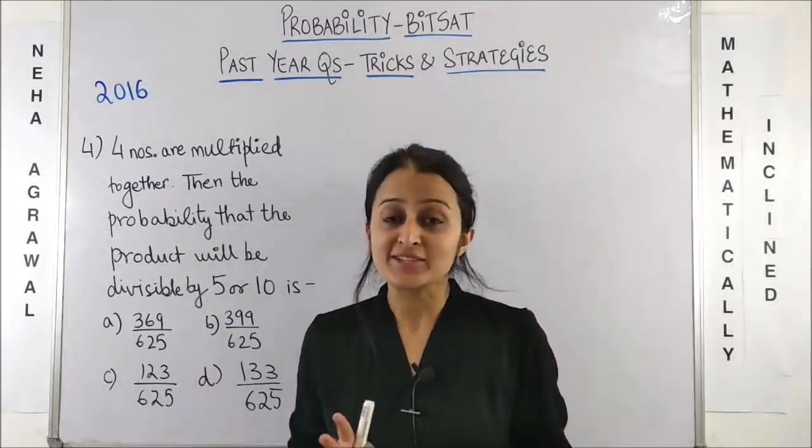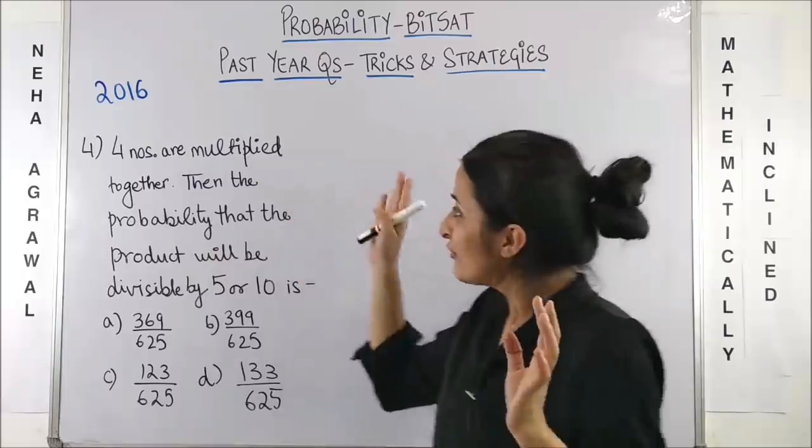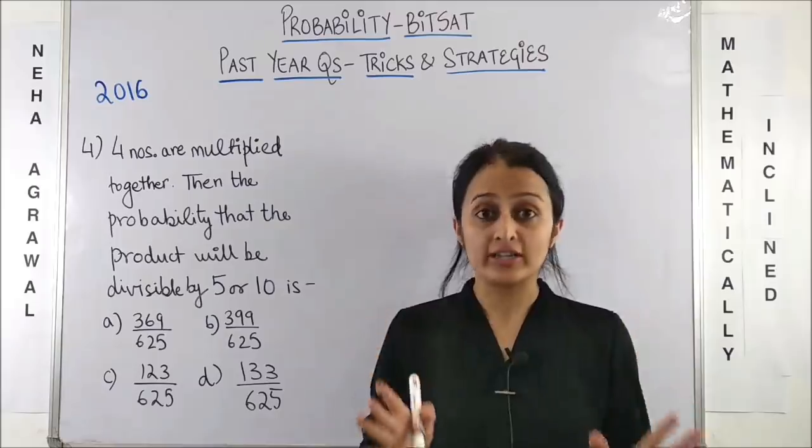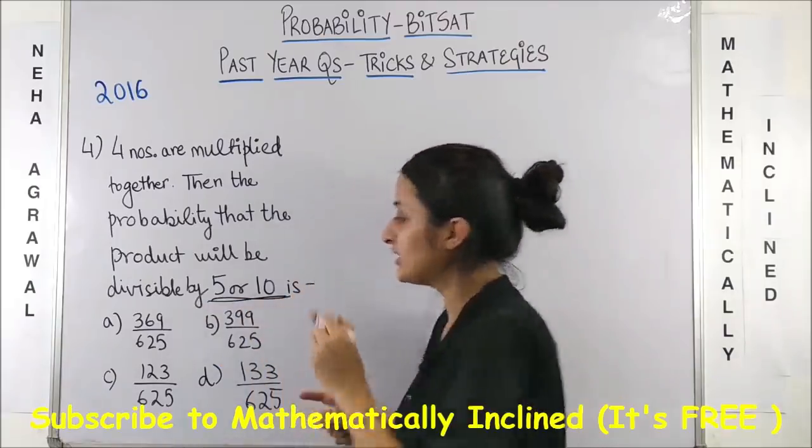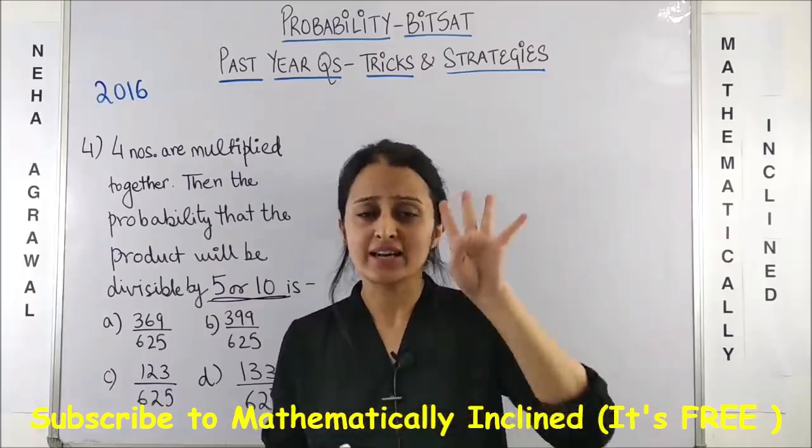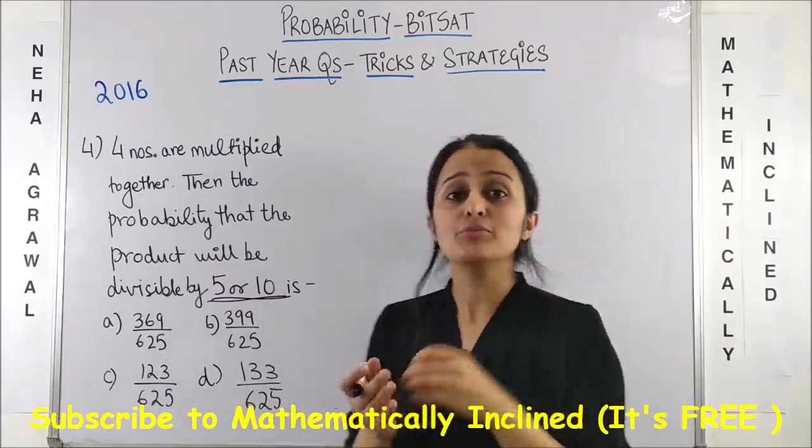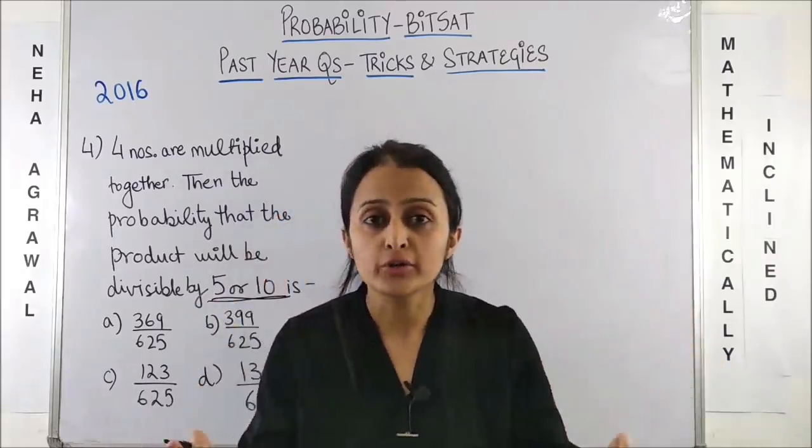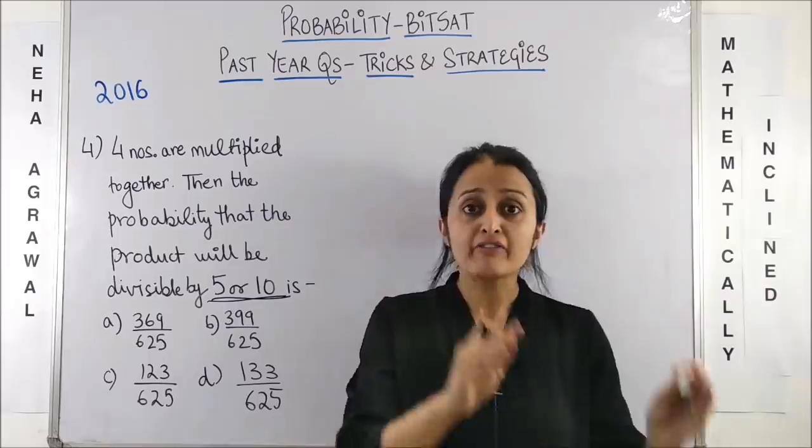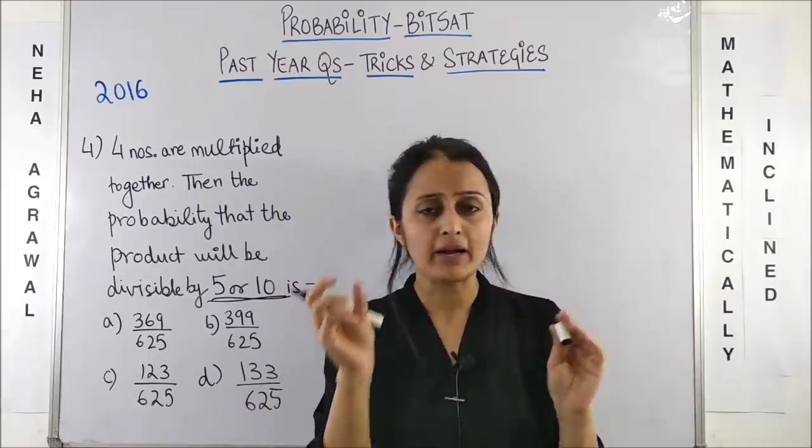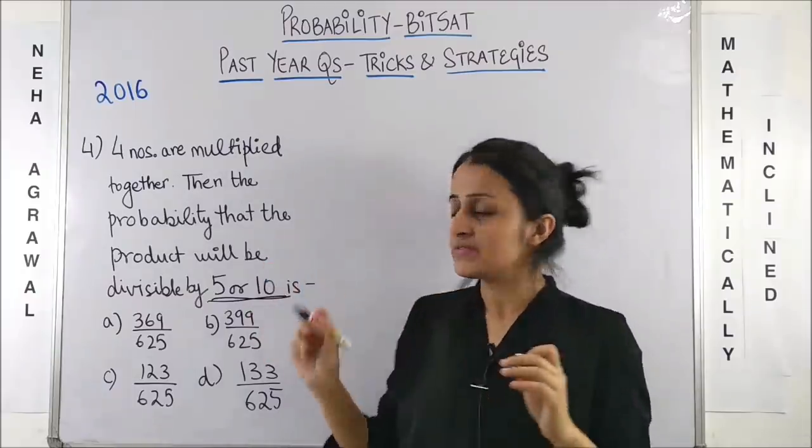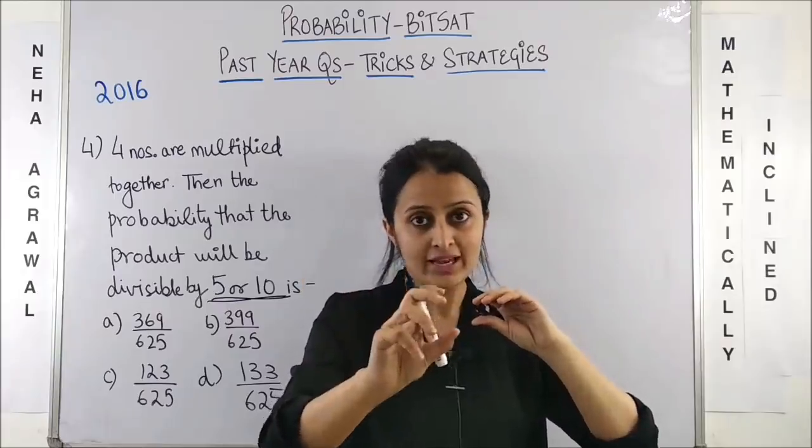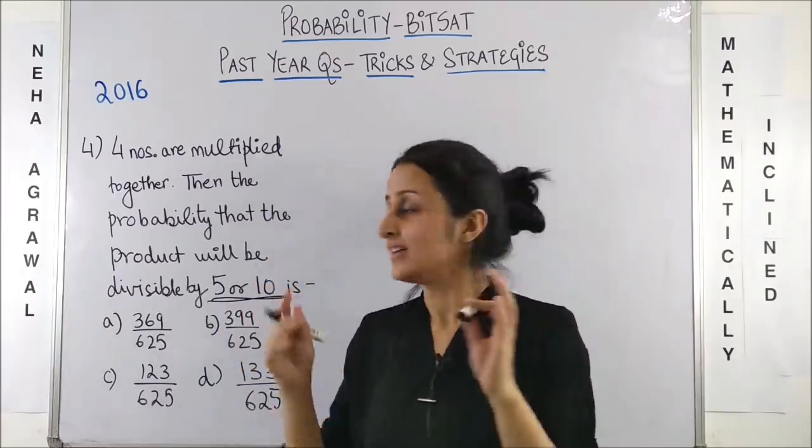Let's look at the next question again, a little teda meeda. 4 numbers are multiplied together. Okay? Then, the probability that the product will be divisible by 5 or 10 is what? So, basically boss, there are 4 numbers, right? And you multiply them. They are not telling us what kind of numbers. So, just 4 numbers. We all know that it will be divisible by 5 or by 10 will completely depend on its last digit, right? Because if it is divisible by 5, then it has to be a 5 or 0 at the end. And for 10, it has to be simply a 0 at the end.